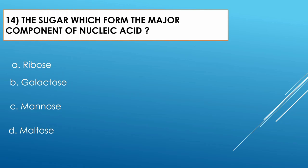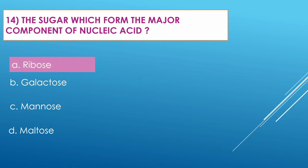Question number fourteen: The sugar which forms the major component of nucleic acid — Option A: ribose. Option B: characters. Option C: minerals. Option D: mortals. The correct option is ribose. Nitrogenous base, phosphate group, and ribose sugar combine to make nucleic acid.